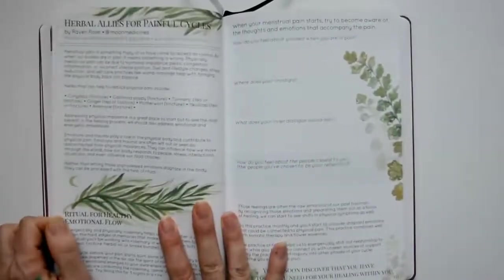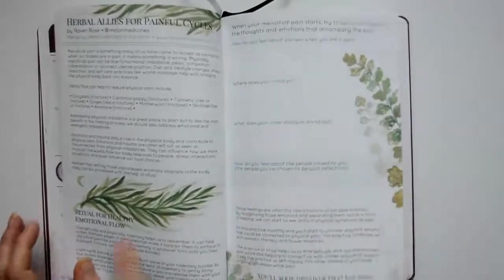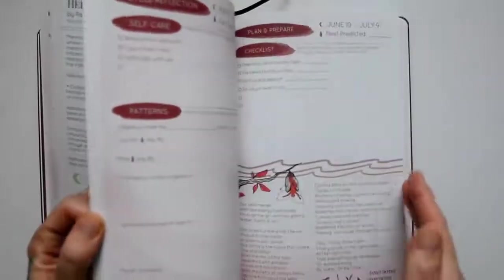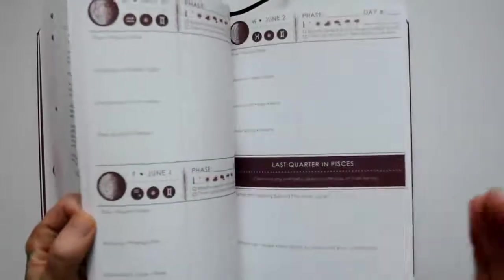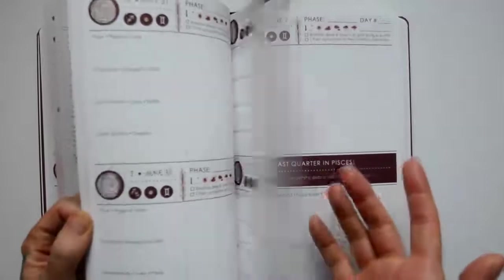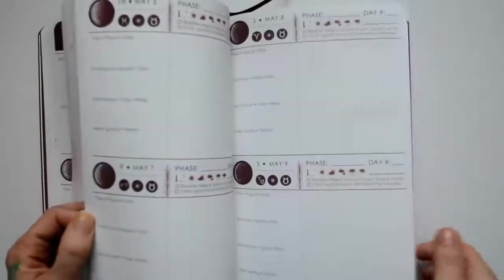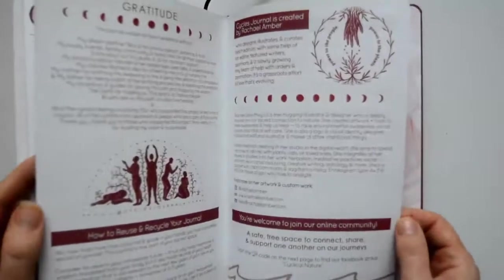Here's herbal allies for painful cycles, ritual for healthy emotional flow. This journal is so worth the money. Not only is it a journal planner and tracker, but it's also got all the information you need. It's crammed. This thing is 320 pages long.